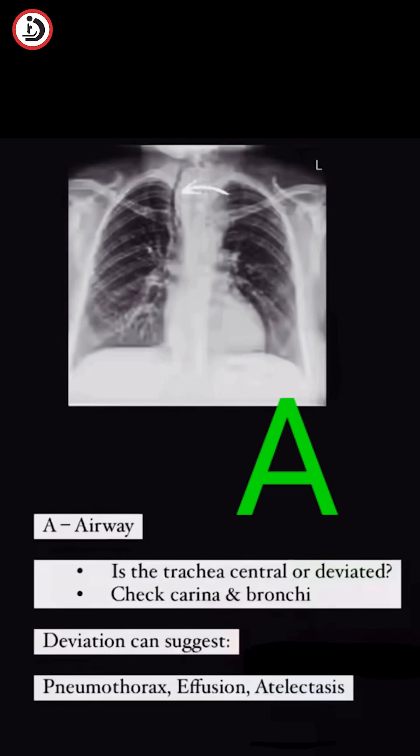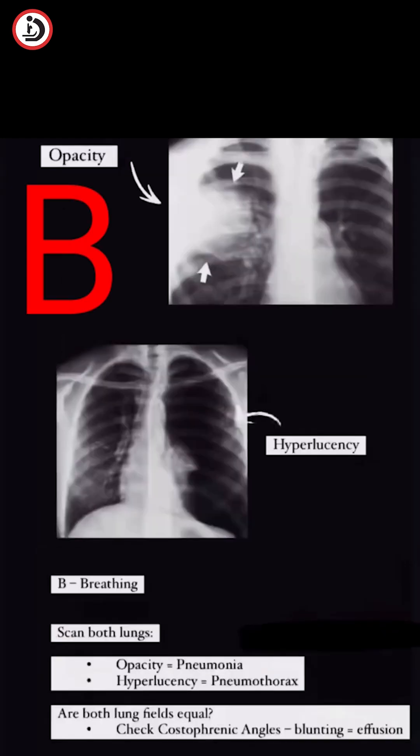A is for airway — is the trachea straight? Look for deviation, don't be late. B is for breathing — lungs left and right. Are they clear? Is there air? Is it tight?